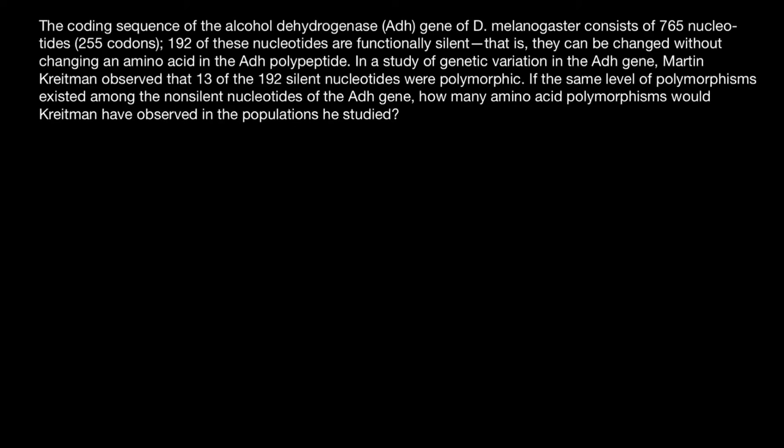Hello and welcome to Nikolai's genetics lessons. Today's problem: the coding sequence of the alcohol dehydrogenase ADH gene of D. melanogaster consists of 765 nucleotides and 255 codons. 192 of these nucleotides are functionally silent — they can be changed without changing an amino acid in the ADH polypeptide. Martin Kreitman observed that 13 out of 192 silent nucleotides were polymorphic. If the same level of polymorphism existed among the non-silent nucleotides, how many amino acid polymorphisms would Kreitman have observed?